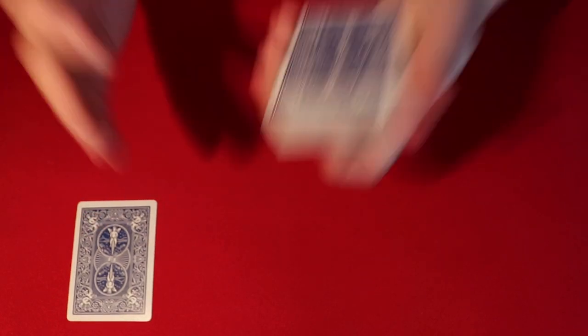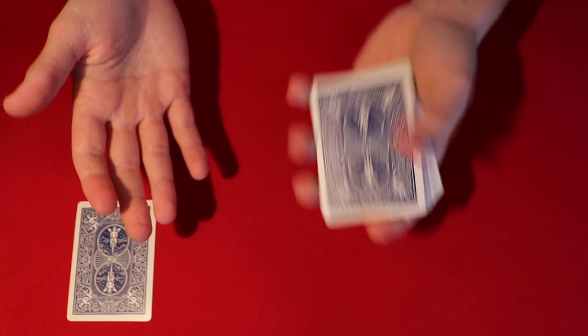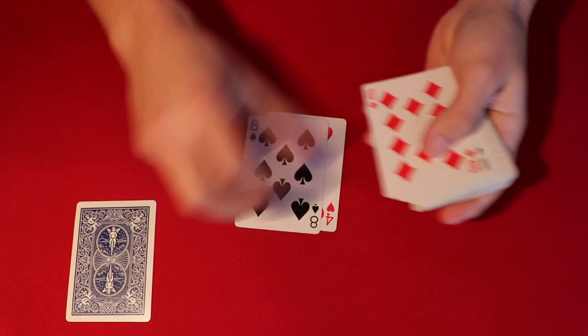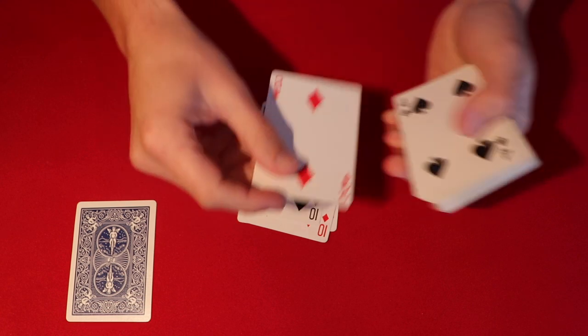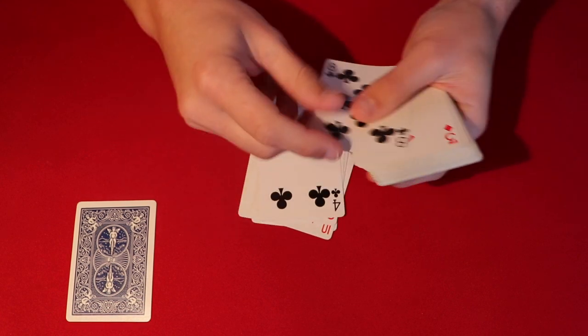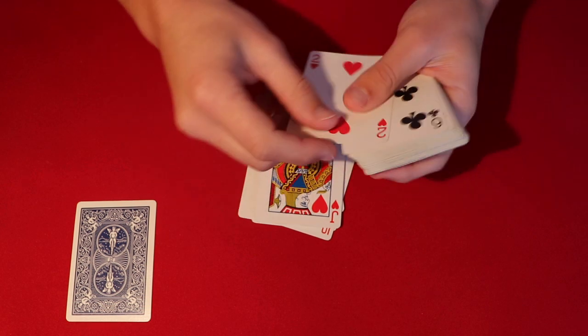And then once you've done that, what you'll do is you'll tell the spectators that you are going to have them tell you stop while you're dealing out the cards. So you take these cards out and you say, okay, look, whatever you want, just tell me when to stop. And let's say they were to say stop right there.